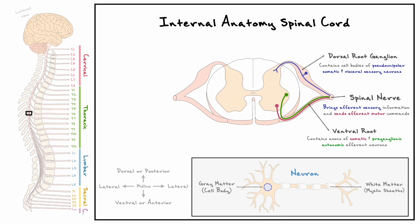Two other anatomical landmarks important to mention are the posterior median sulcus and the anterior median fissure. With this established, let's cover the divisions of gray and white matter, starting with the gray matter.